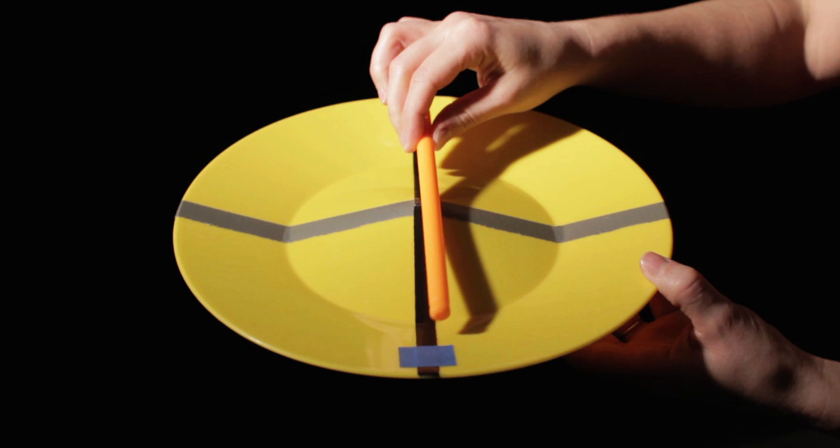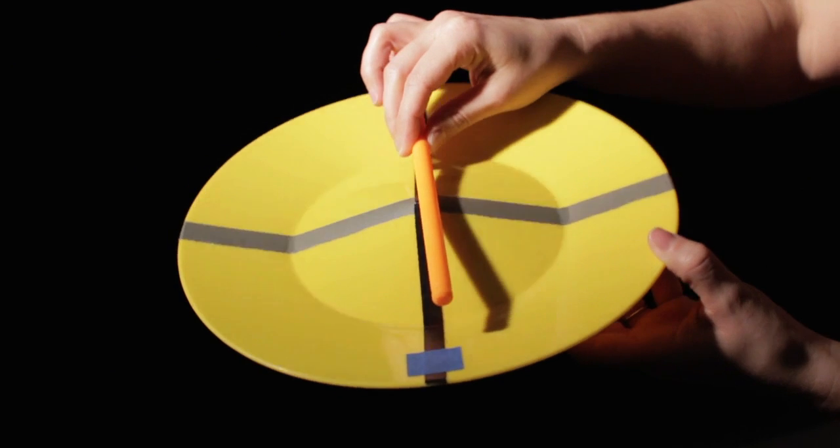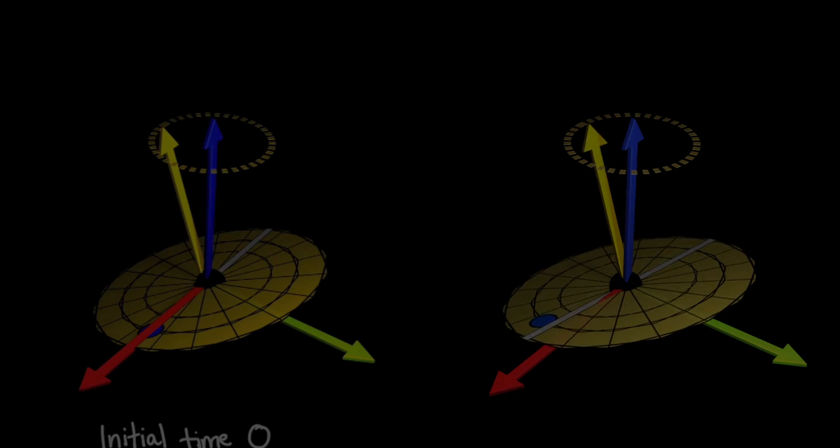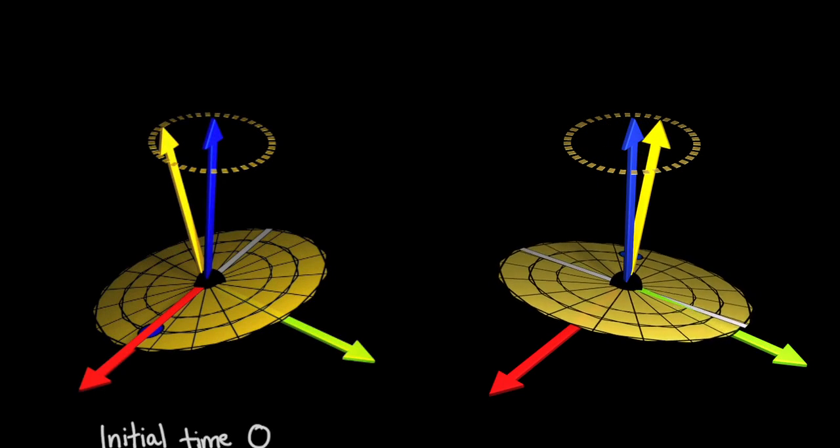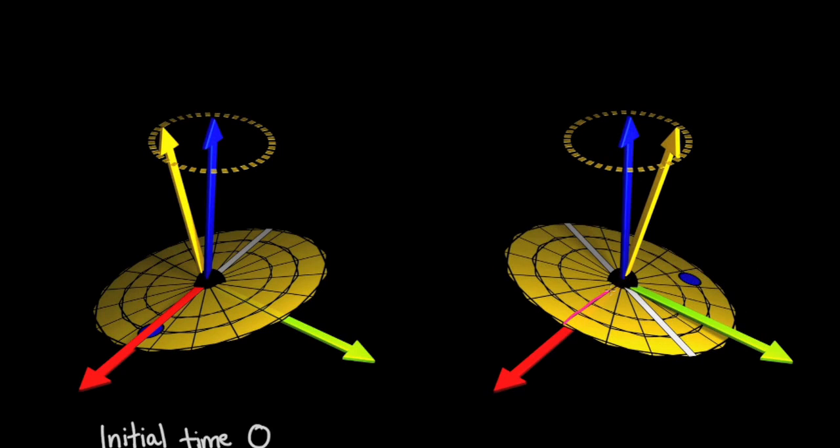For simplicity, we assume that the marked point begins along the x-axis, and the initial tilt axis aligns with the x-axis, with the tilt angle theta. Let's start by creating a sequence of rotations that rotates the marked point to the angle omega d times t, and the tilt axis to the angle omega w times t for any time t.